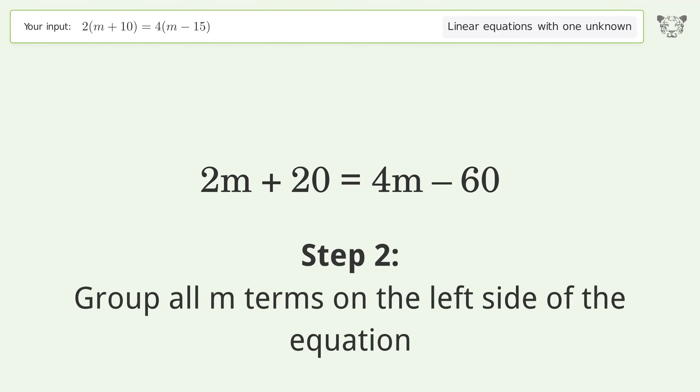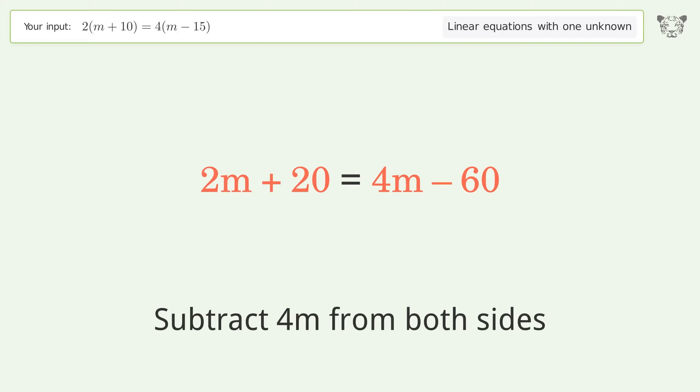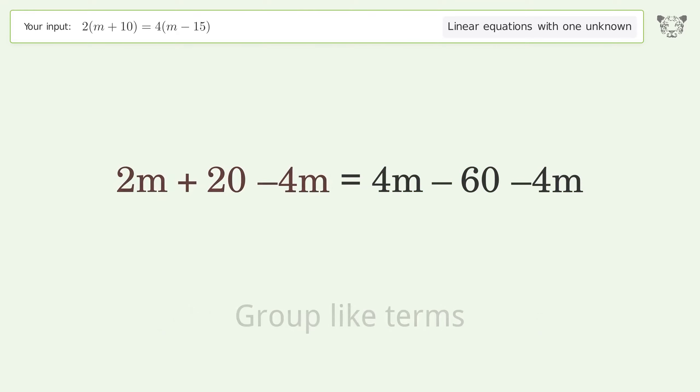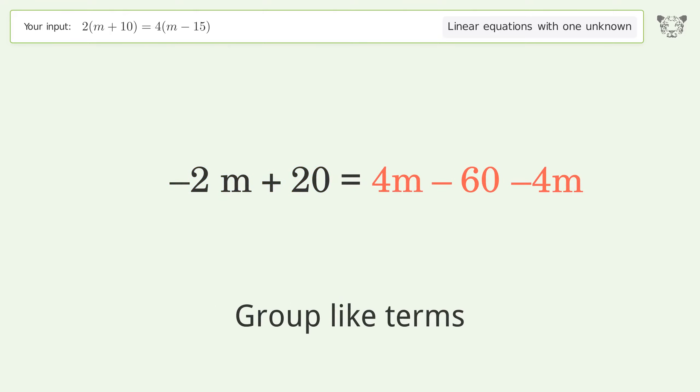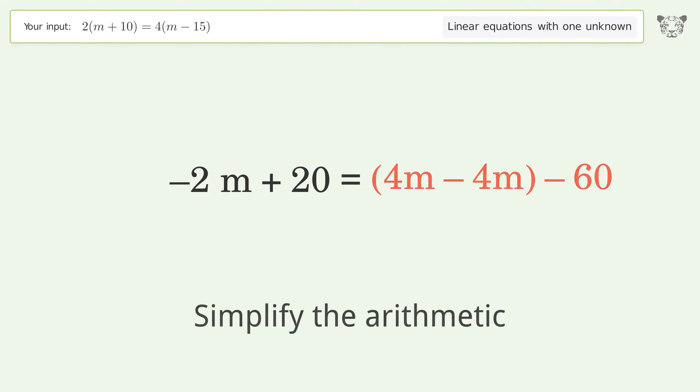Group all m terms on the left side of the equation. Subtract 4m from both sides. Group like terms and simplify the arithmetic.